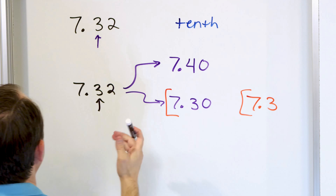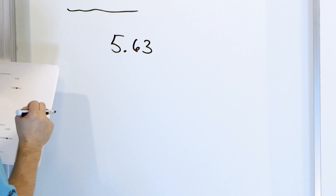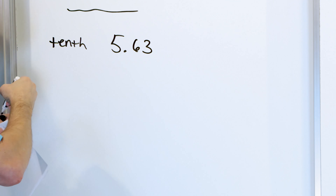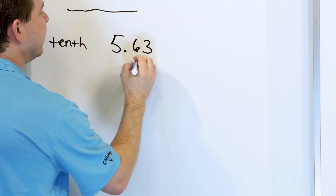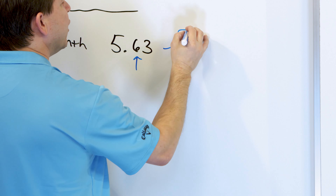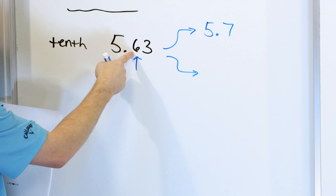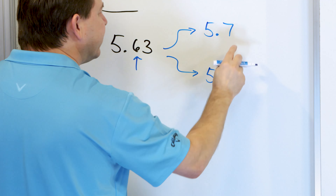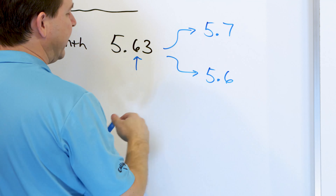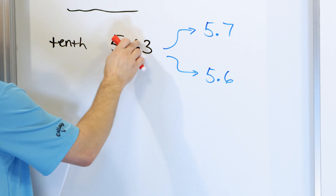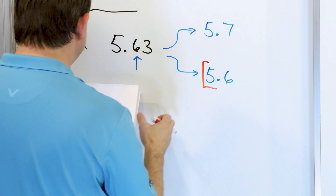Let's take a look at problem number two. We're going to round five point six three to the nearest tenth. Identify the tenths position — it comes right after the decimal point. Our choices are either to go up to five point seven or stay down at five point six. We look next door and we have a three, which is less than five, so we round down to the answer of five point six.